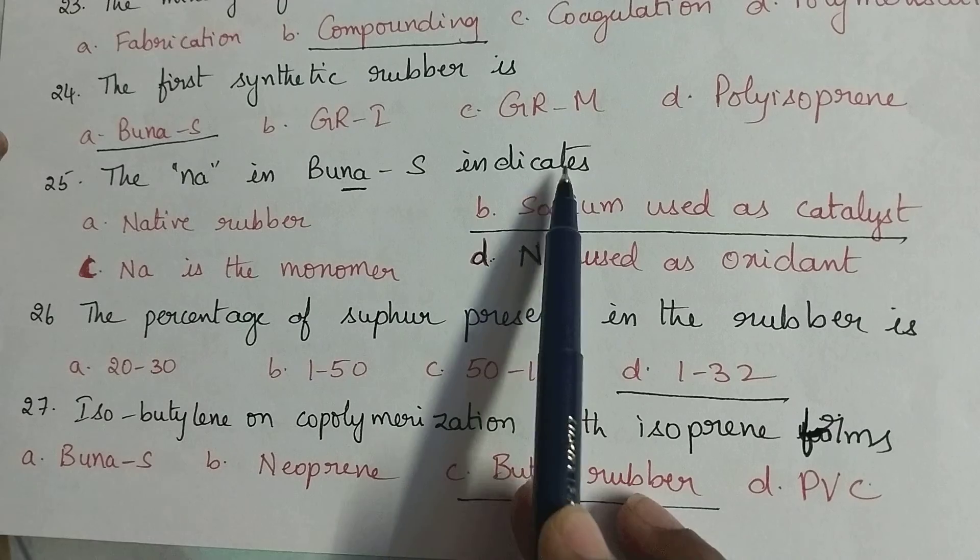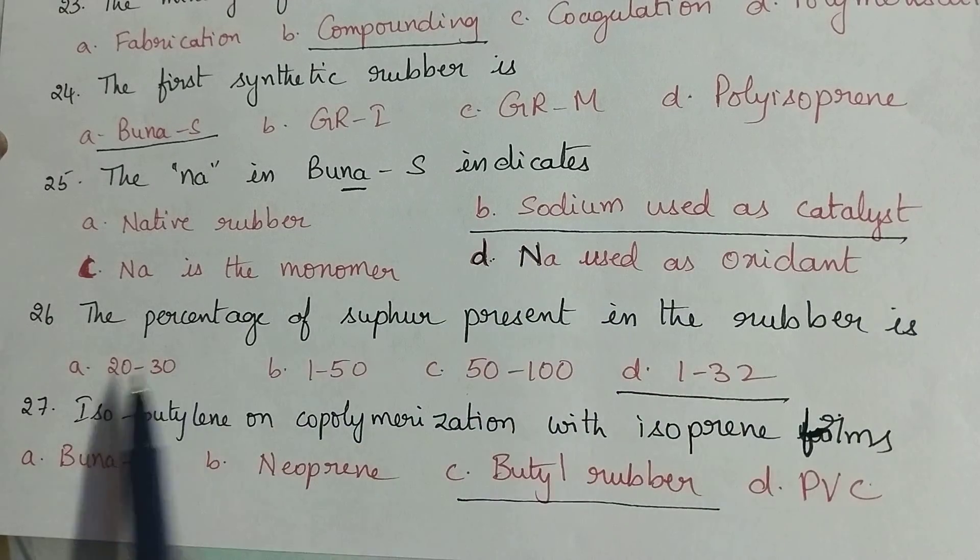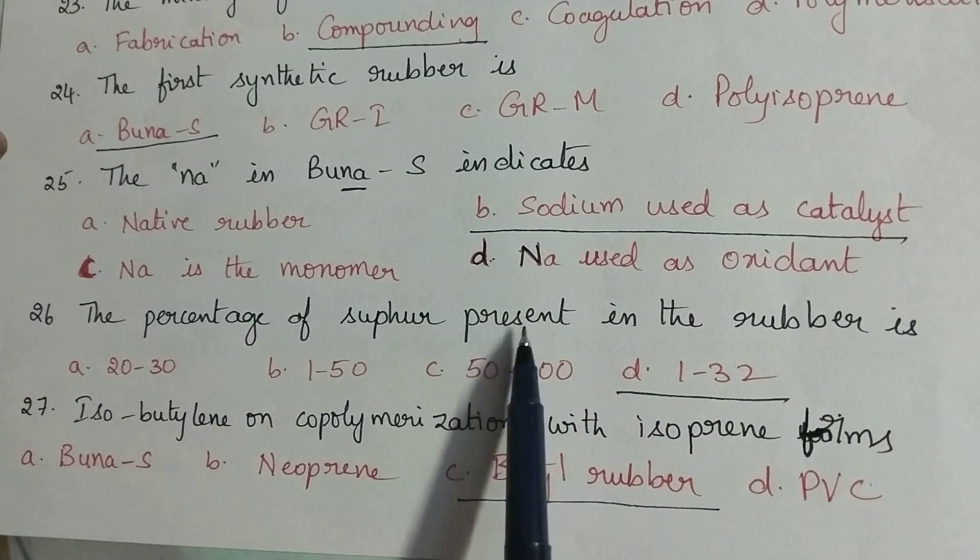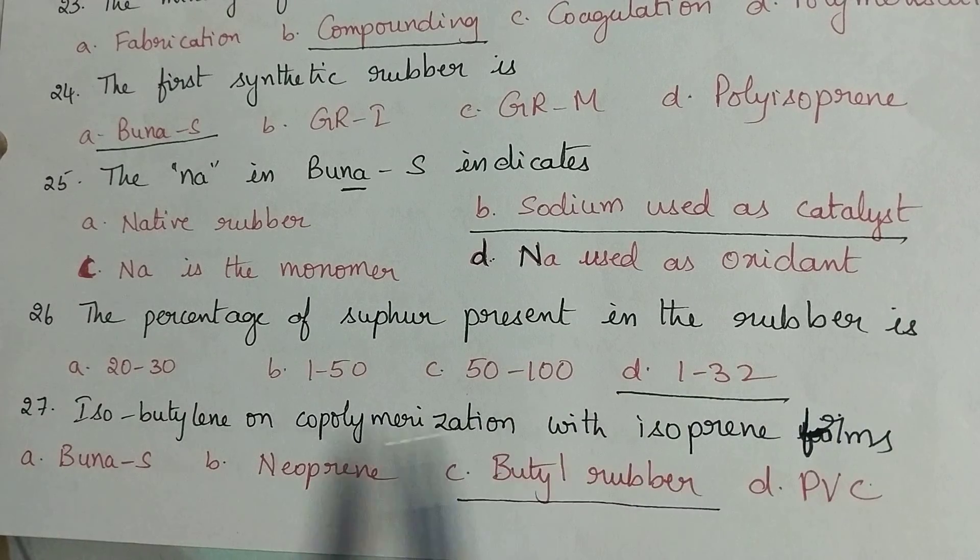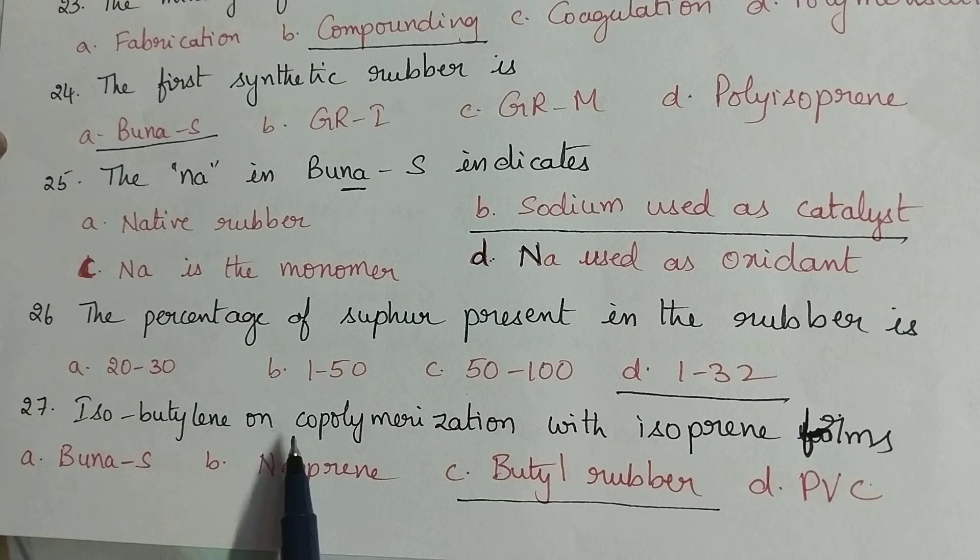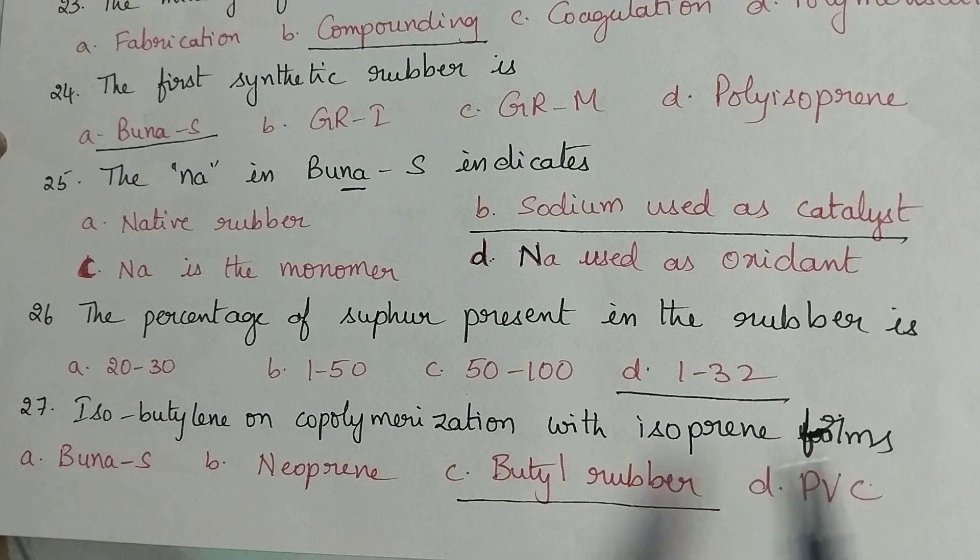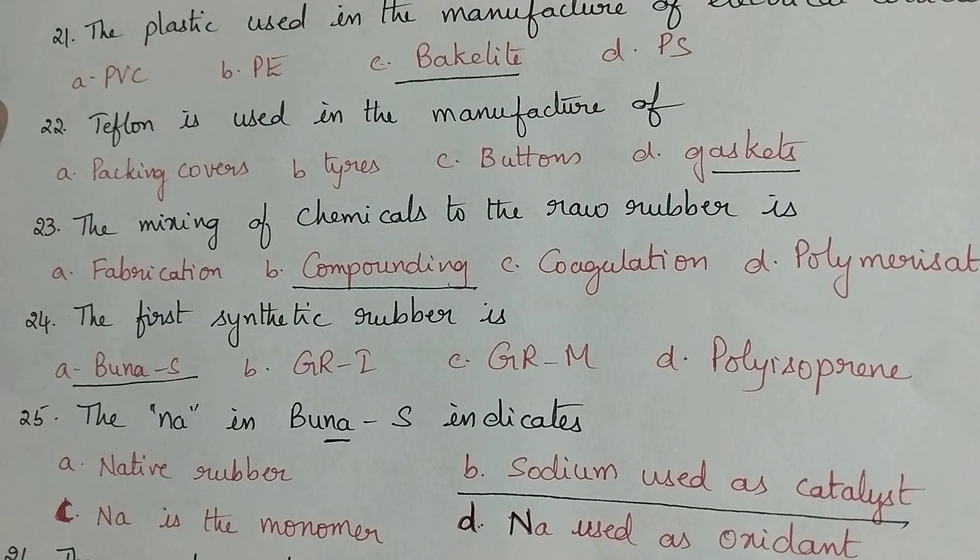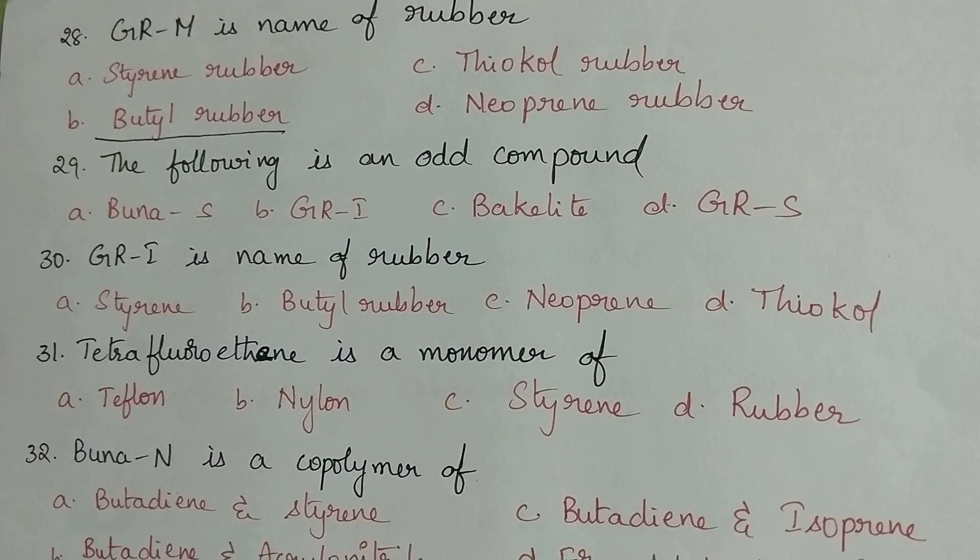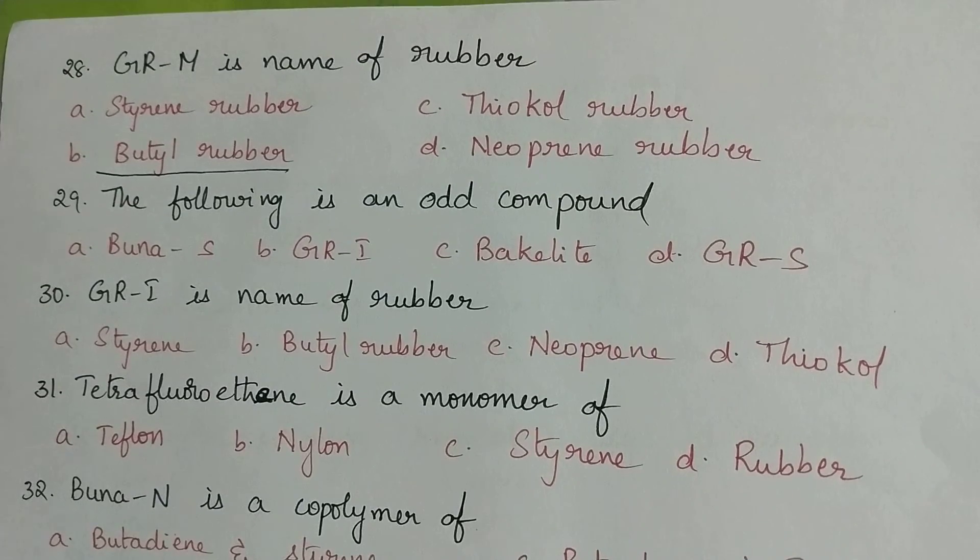The Na in Buna-S indicates sodium used as catalyst. The percentage of sulfur present in the rubber is 1 to 32 percent. Isobutylene on copolymerization with isoprene forms butyl rubber. What is the percentage of sulfur present in vulcanized rubber? 1 to 32 percent.